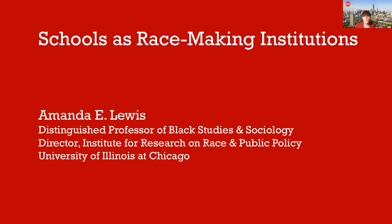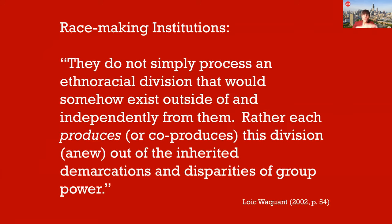One of the big things I've grappled with is thinking about race and racism as a process — a concept I started using seriously in my first book, 'Race in the Schoolyard.' I wanted to think about the ways that schools played a part in this ongoing process of race. Drawing on the work of Louisville Kant and AP Thompson's concept regarding plantations: schools are not simply processing an ethno-racial division that would somehow exist independently from them, but are part of the process of producing or co-producing them out of inherited demarcations and disparities of group power.